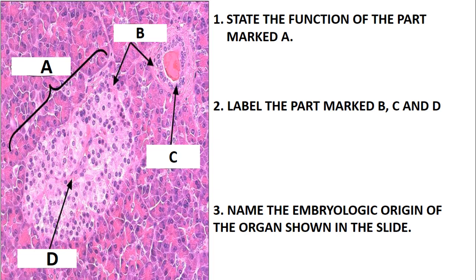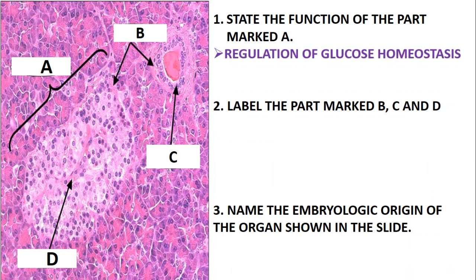State the function of the part marked A. This part is talking about the islets of Langerhans. The islets of Langerhans play a role in glucose homeostasis — they regulate blood glucose levels to make sure that glucose levels in the body are not too high or too low.